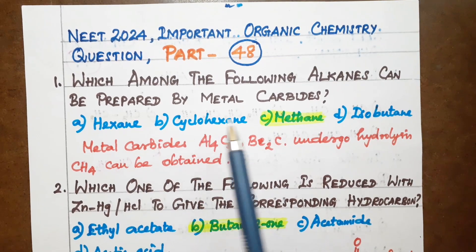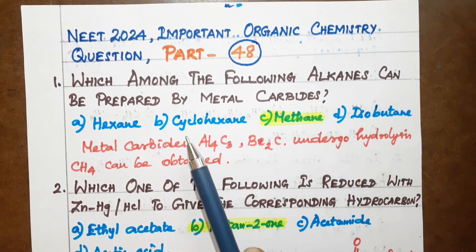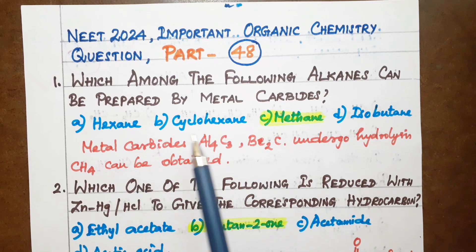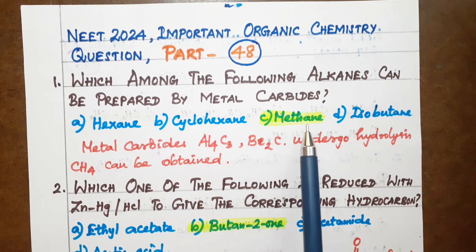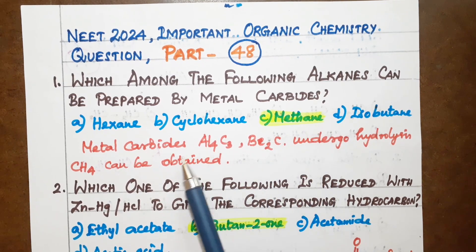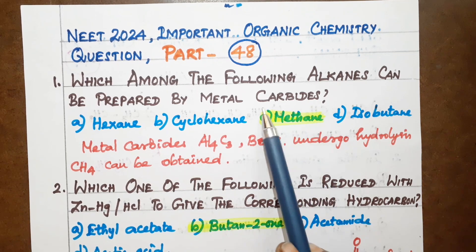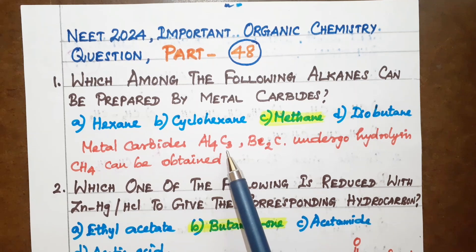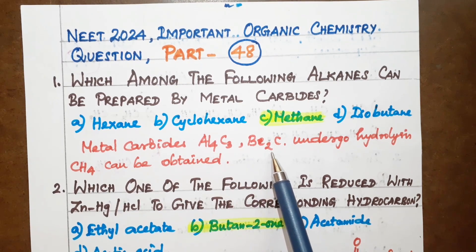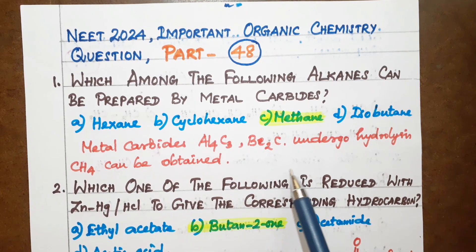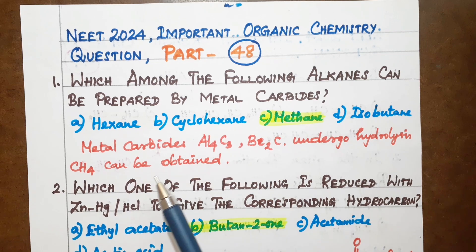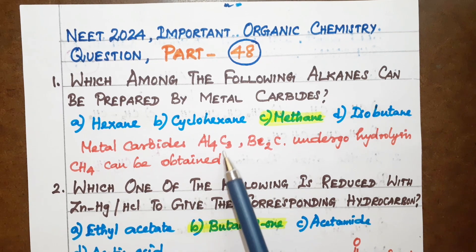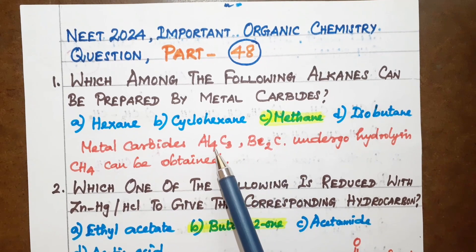Cyclohexane, methane, isobutane. Among these alkanes, methane is the answer. Metal carbides, specifically aluminum carbide (Al4C3) and beryllium carbide (Be2C), undergo hydrolysis to prepare methane.